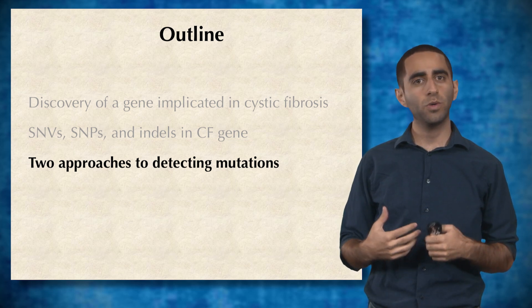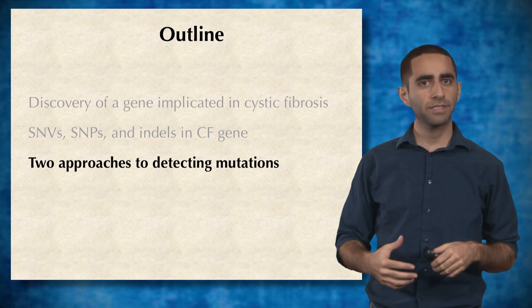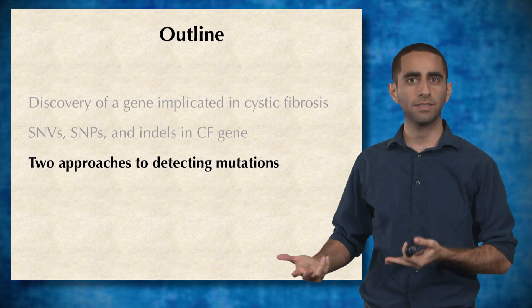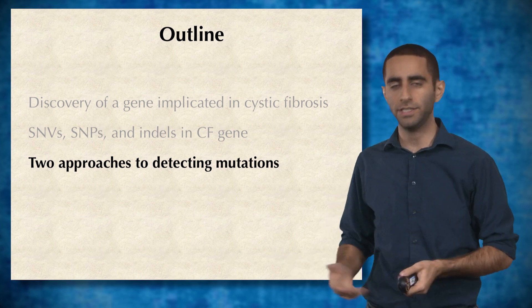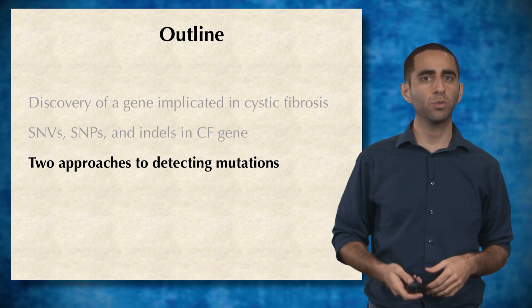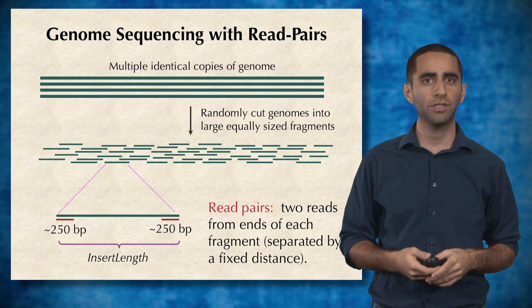We've discussed what single nucleotide variants are and that they can have genetic impacts such as various diseases. But how do we actually find these rare variants that occur in the population?